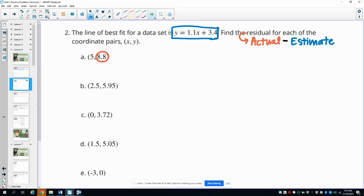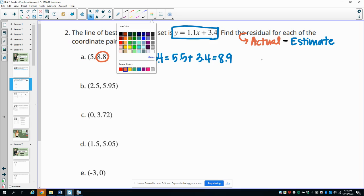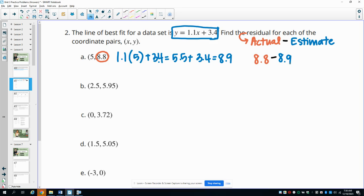We'll go ahead and calculate those estimated values. We'll do 1.1 times our X value of 5 plus 3.4. So we get 5.5 plus 3.4, which gives us 8.9 for our estimate. So then we'll figure out the residual by taking 8.8 and subtracting 8.9, which gives us our residual of negative 0.1 for this one.